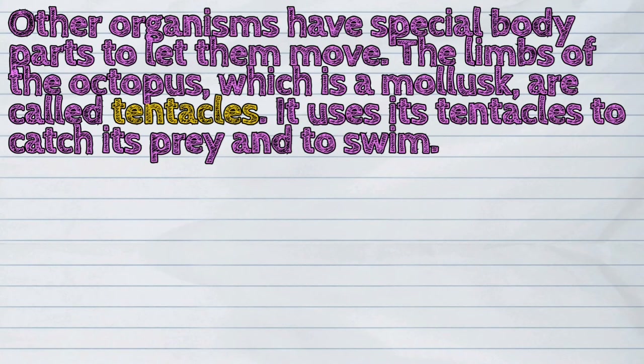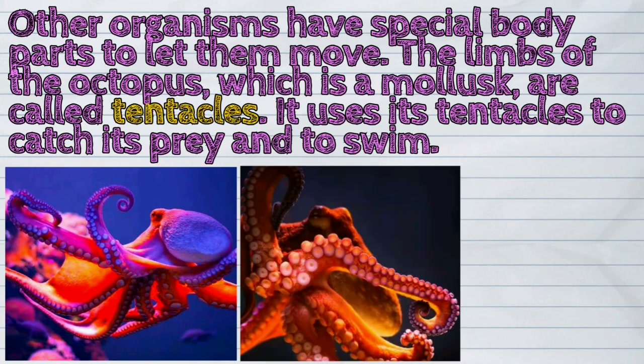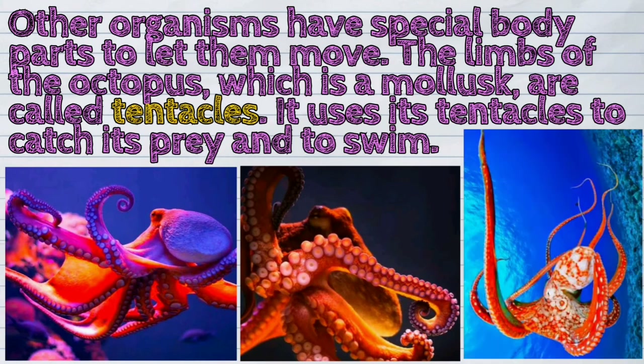Other organisms have special body parts to let them move. The limbs of the octopus, which is a mollusk, are called tentacles. It uses its tentacles to catch its prey and to swim.